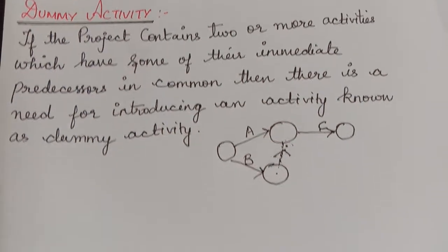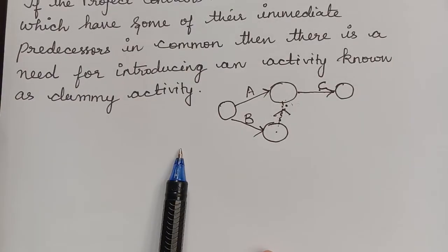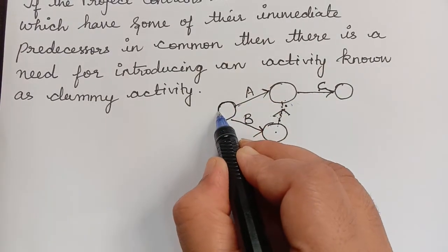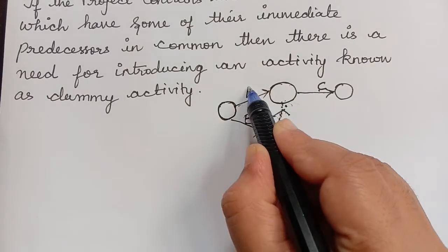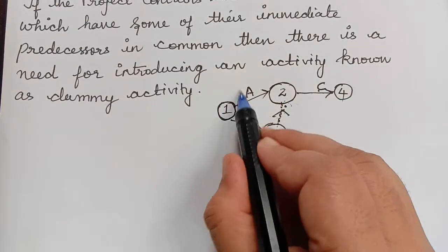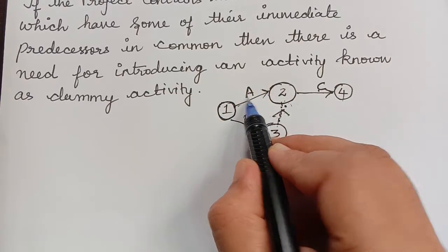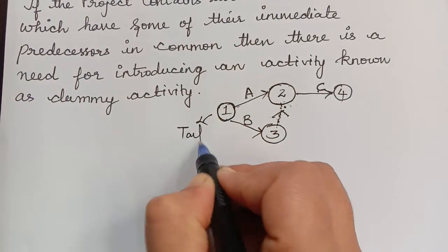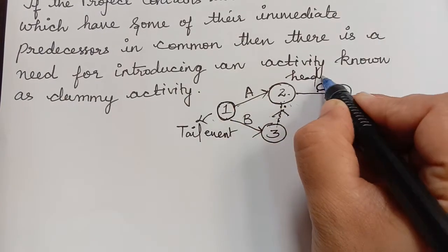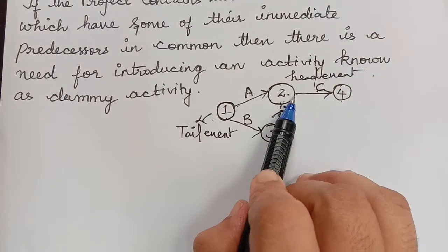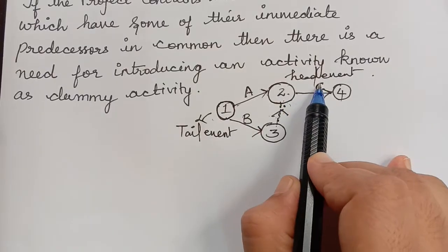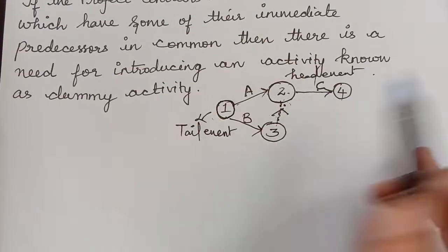These are the basic definitions and terminologies used in scheduling network analysis. In the arrow diagrams, the initial node is called the tail event and the terminal node is called the head event. For activity A, node 1 is the initial node (tail) and node 2 is the terminal node (head). For activity C, the tail event is 2 and the head event is 4.